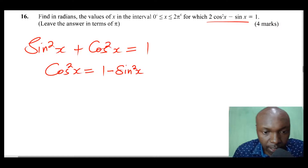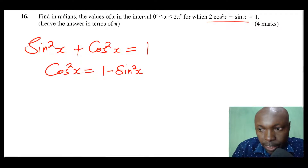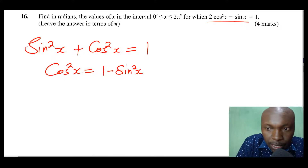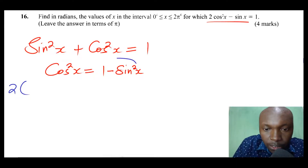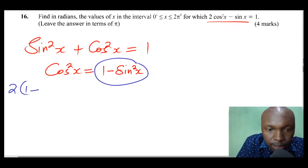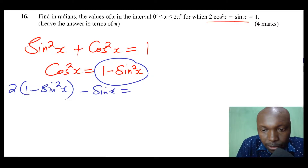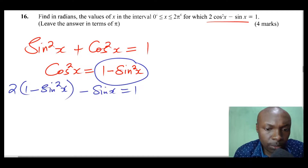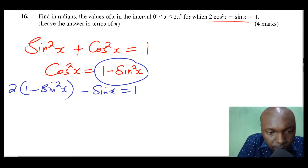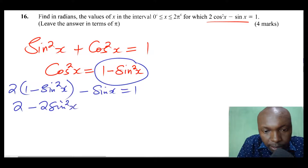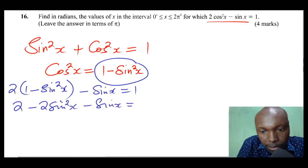Now after getting that, I will replace cos²x in the equation. So 2cos²x becomes 2 times (1 minus sin²x), then minus sin x equals 1. Multiplying out the bracket, you get 2 minus 2sin²x minus sin x equals 1.